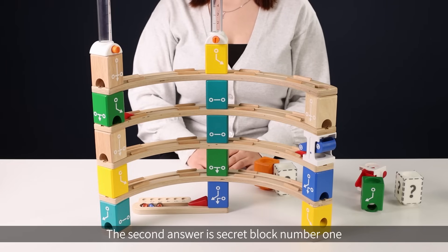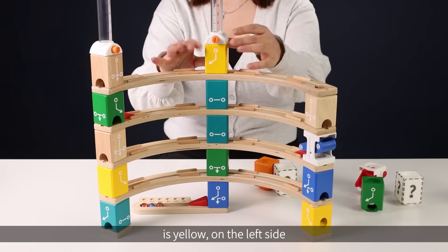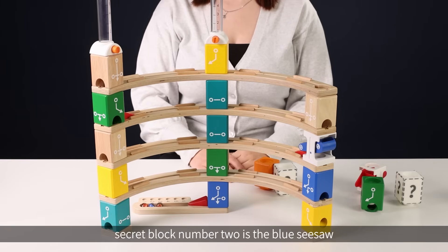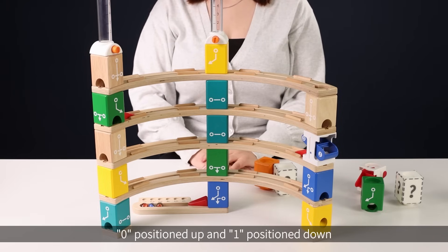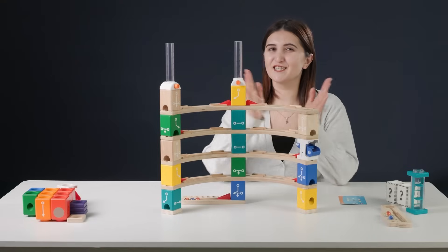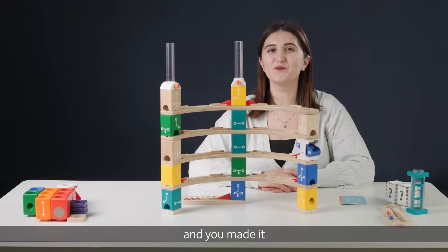The second answer is secret block number one is yellow on the left side. Secret block number two is the blue seesaw with zero positioned up and one positioned down. Good job, everyone. Today's challenge was a little bit tricky and you made it.